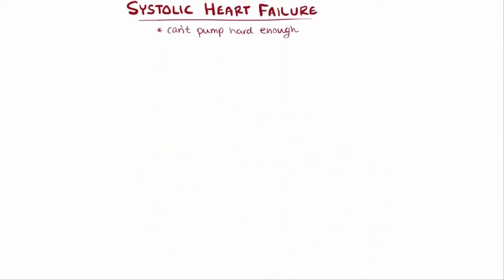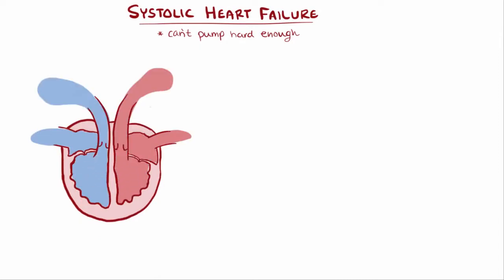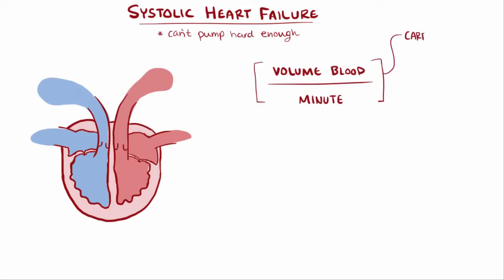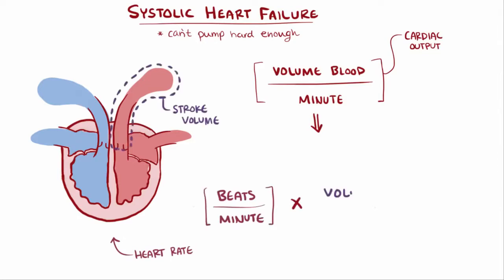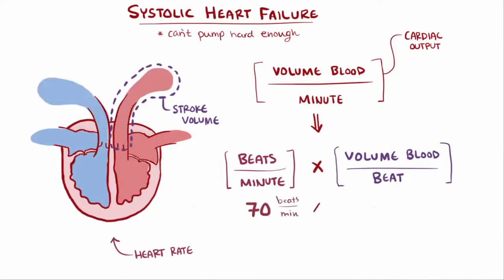First up is systolic heart failure. A mathematical way to think about this is that the heart needs to squeeze out a certain volume of blood each minute, called cardiac output, which can be rephrased as the heart rate — the number of beats in a minute — multiplied by the stroke volume, the volume of blood squeezed out with each heartbeat. For example, an adult heart might beat 70 times per minute, and the left ventricle might squeeze out 70 milliliters per beat, so 70 times 70 equals a cardiac output of 4,900 milliliters per minute, which is almost 5 liters per minute.